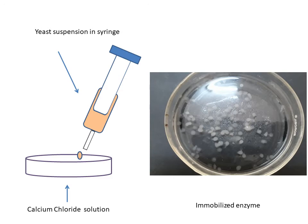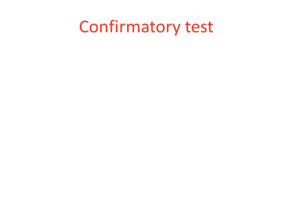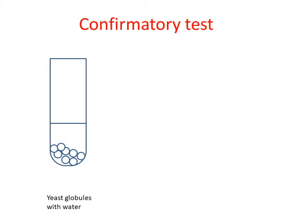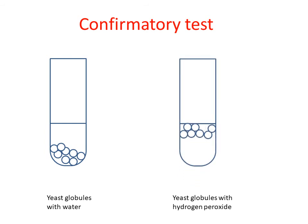How can we confirm that our enzyme is immobilized? Let us see the confirmatory tests. We take the washed yeast globules. When we add water, the globules will sink because there is no substrate present. But if we take the same yeast globules with hydrogen peroxide, the globules will float. They won't sink because the enzyme present in the yeast will react with the hydrogen peroxide and release oxygen, which makes the globules float. This confirms that our enzyme is immobilized.